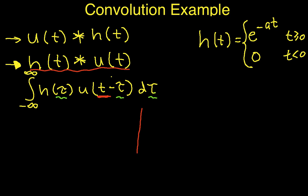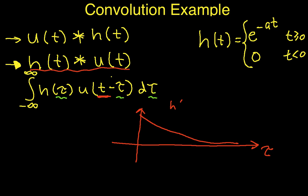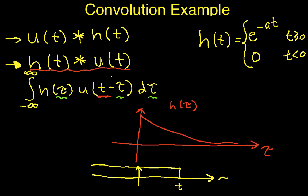Let me plot h of tau. This is the tau axis, which will become extremely important, and h of tau is a decaying exponential. Now, u of t minus tau on the tau axis is the unit step function flipped about the origin and then shifted to the right by t units. The unit step function starts off looking like this; if I flip it about the line tau equals zero, and then slide it t units to the right, it ends up looking like what I've drawn here.